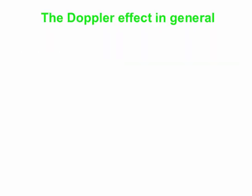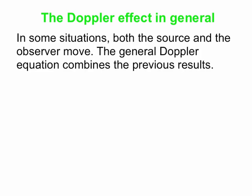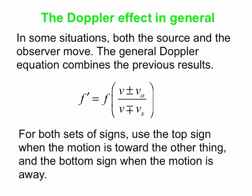We can combine those two equations into one that accounts for everything — whether nothing moves, only the observer moves, only the source moves, or both move. This applies to sound waves and ultrasonic waves, not to electromagnetic waves. The combined equation is f′ = f × (v ± v_o) / (v ∓ v_s). Always use the top sign when the motion is toward and the bottom sign when the motion is away.